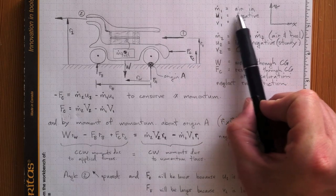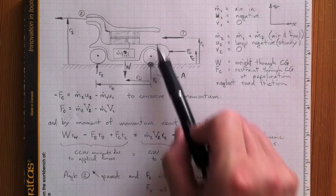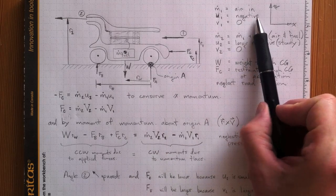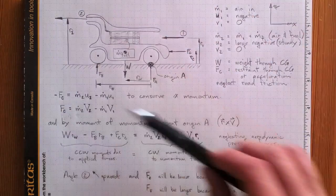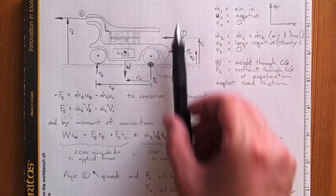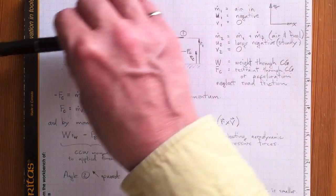So, M dot 1 is the air that's in, that'll depend on the size of the engine and so on. U1 is a negative number because it's going in the negative x direction. And V1 is equal to zero, there's no vertical motion. The air's all going horizontally.